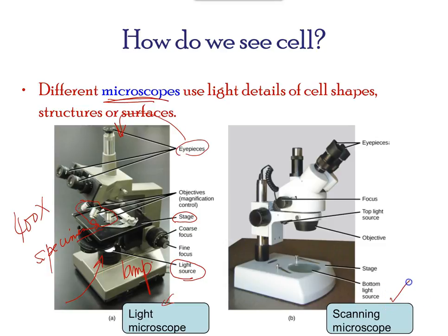A second type of microscope used in laboratories is the dissecting microscope, also called a scanning microscope. These microscopes have a lower magnification — 20 to 80 times the object size — compared to the light microscope. They can provide a three-dimensional view of the specimen, and thick objects can be examined with many components in focus at the same time. These microscopes are designed to give magnification and clarity of tissue structure as well as the anatomy of the whole organ.